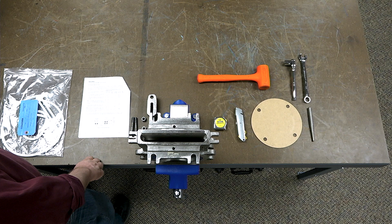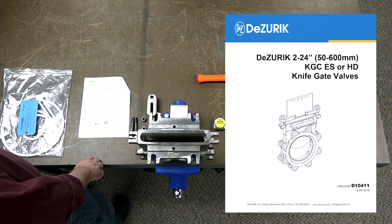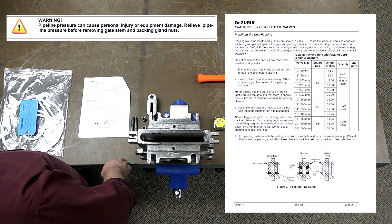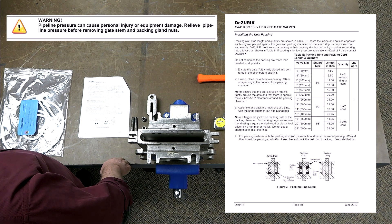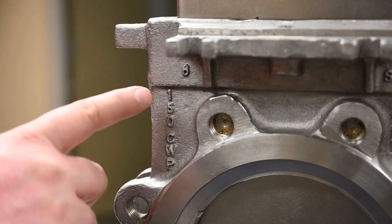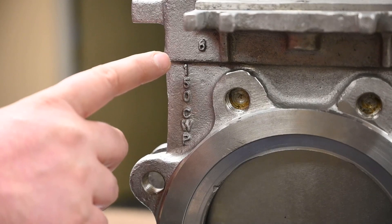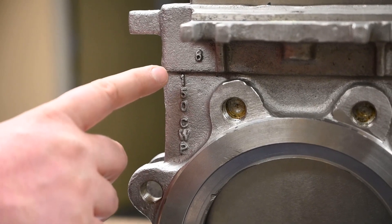The packing repair kit includes an instruction manual, otherwise known as the IOM. Be sure to follow all cautions and warnings in the IOM. In the IOM, you'll find a table giving the proper length for each row of packing and the number of packing rows for each valve size. Valve size can be verified on the body casting.